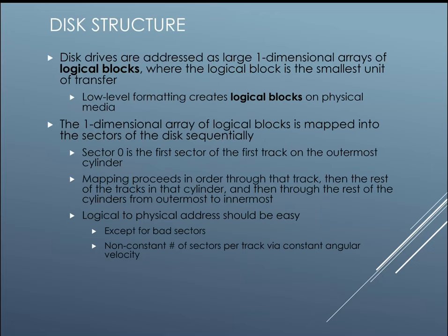When we do have a disk, we consider it as a large one-dimensional array of logical blocks, where the logical block is the smallest unit of transfer. Low-level formatting creates logical blocks on physical media. The one-dimensional array of logical blocks is mapped onto the actual sectors of the disks sequentially. Sector zero is the first sector of the first track on the outermost cylinder, and mapping proceeds through that track, then the rest of the tracks in that cylinder, and through the rest of the cylinders. Logical to physical address mapping should be easy except when we have bad sectors.